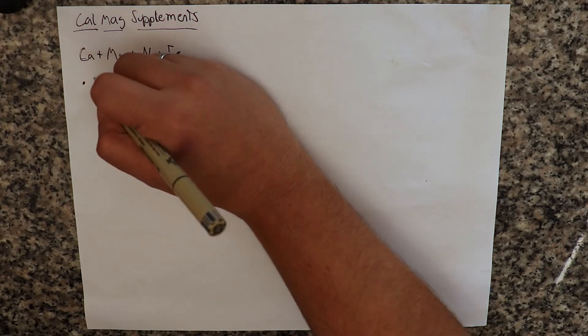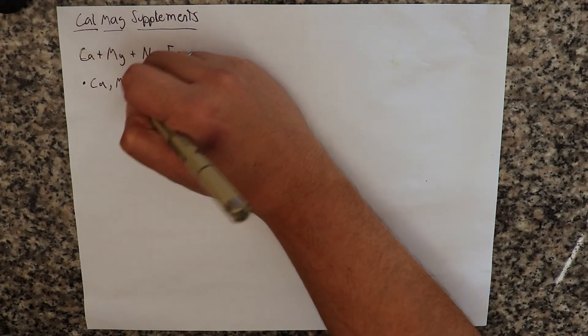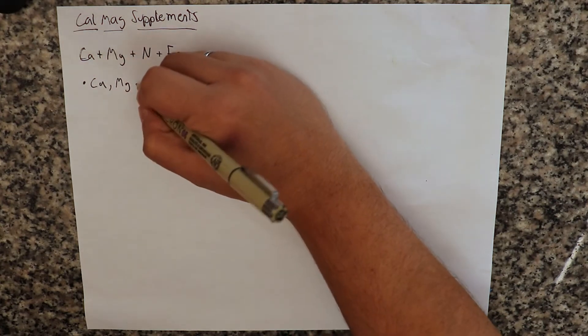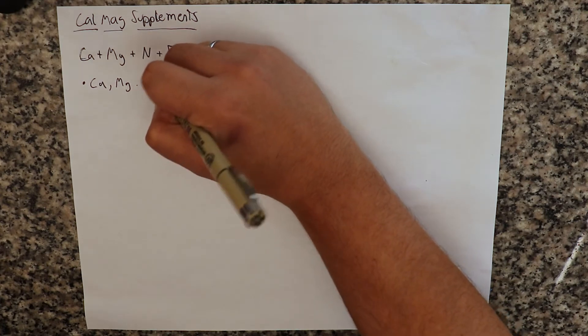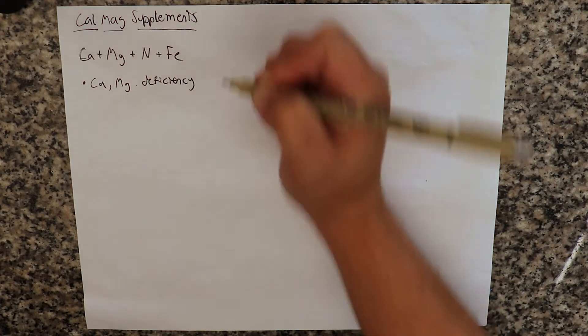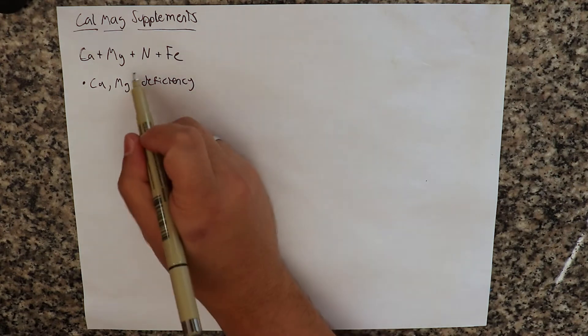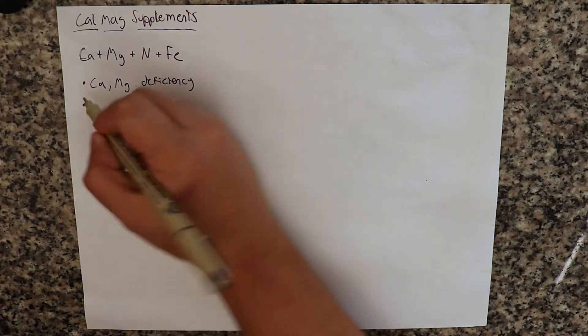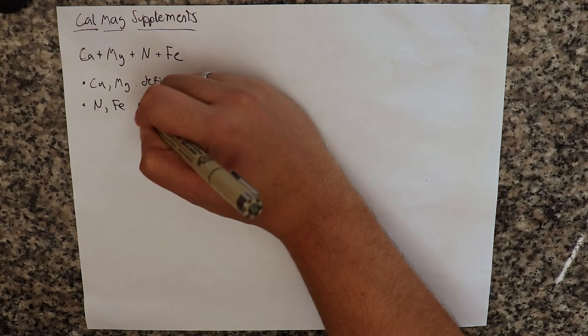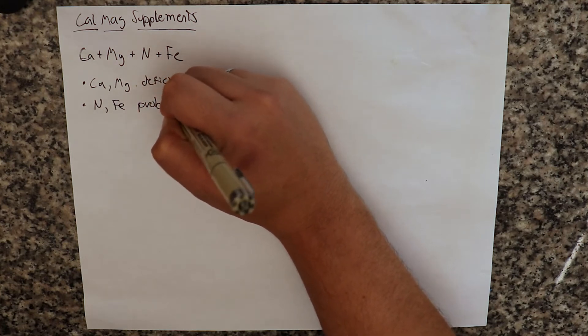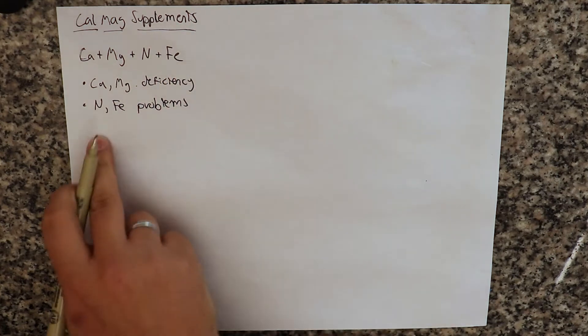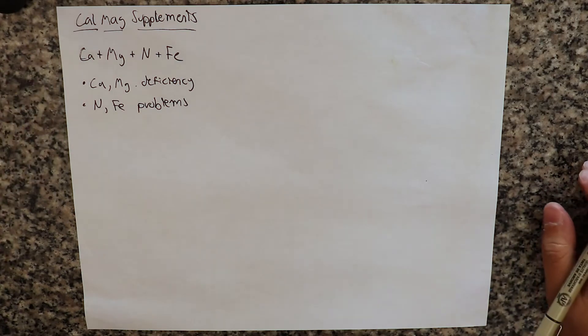Generally, they will tell you that CalMag supplements are made to combat calcium and magnesium deficiency. But because they also have nitrogen and iron, they can also help with N and Fe problems. So they will also help you with both nitrogen and iron problems if you add CalMag.